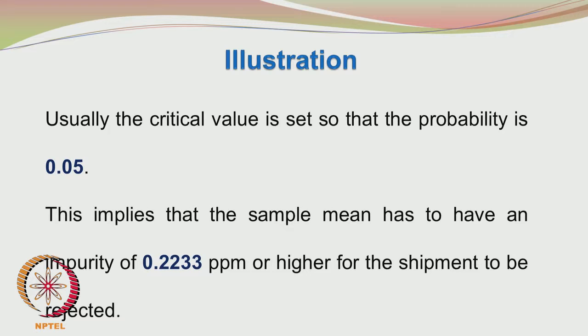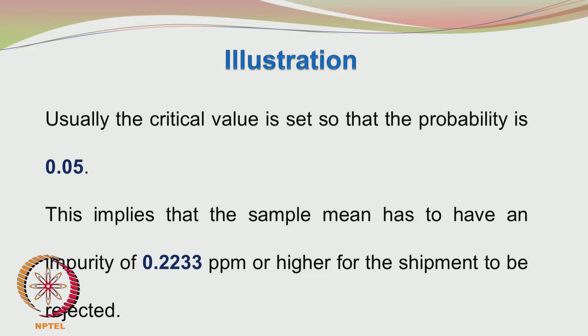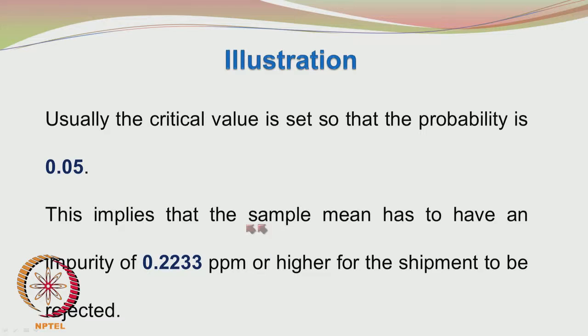Coming back to the illustration where we were looking at the mean impurity obtained from the samples. We want to set the critical value at an impurity level such that the probability is 0.05. This means that the sample mean has to have an impurity of 0.2233 ppm or higher for the shipment to be rejected.